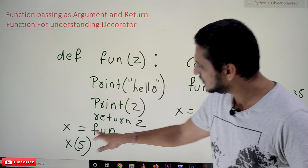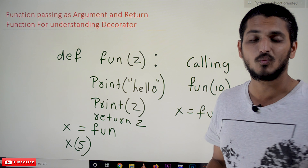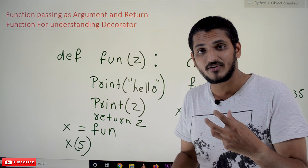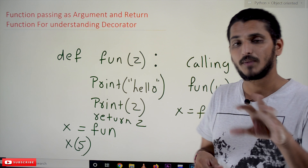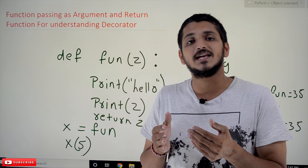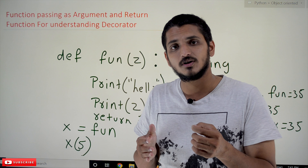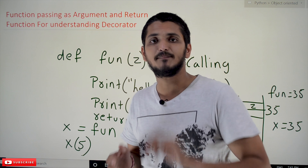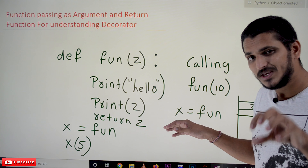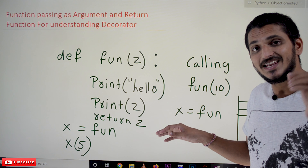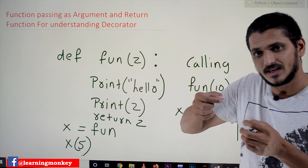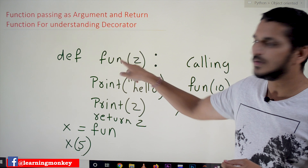So what happens here? x is equal to fun. In Python, as we discussed in our previous classes, everything is an object. A function is also an object. What does object mean? It means it is assigning some memory space and that memory space's starting address is given to this variable fun.